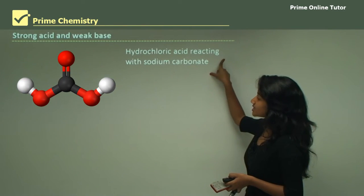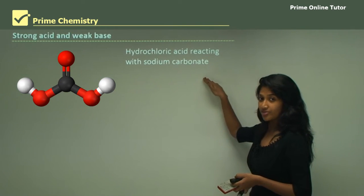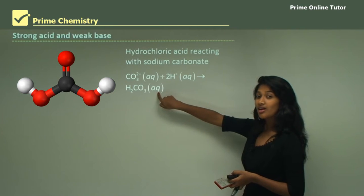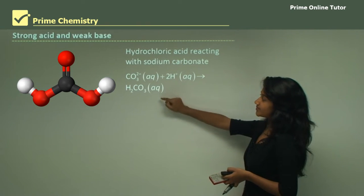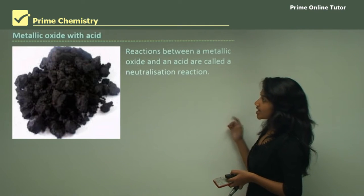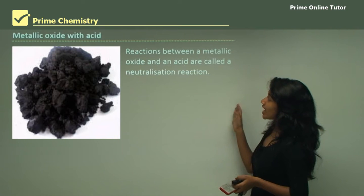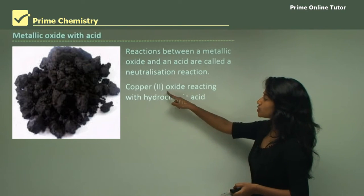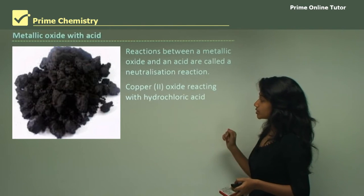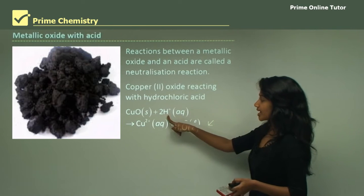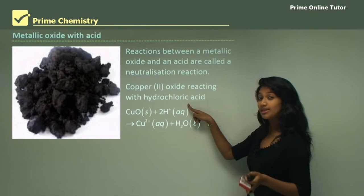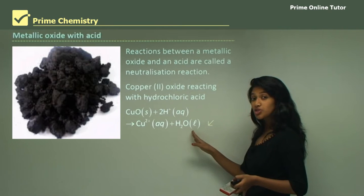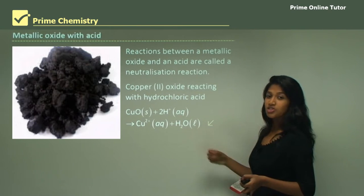Hydrochloric acid reacting with sodium carbonate is an acid-carbonate reaction, producing carbonic acid as an intermediate. Metallic oxides with acids: reactions between metallic oxides and an acid are also called neutralization reactions. For example, copper(II) oxide reacting with hydrochloric acid — the copper oxide reacts with hydrogen ions from the fully dissociated hydrochloric acid to form copper ions and water. Because water is produced, it is classified as a neutralization reaction.